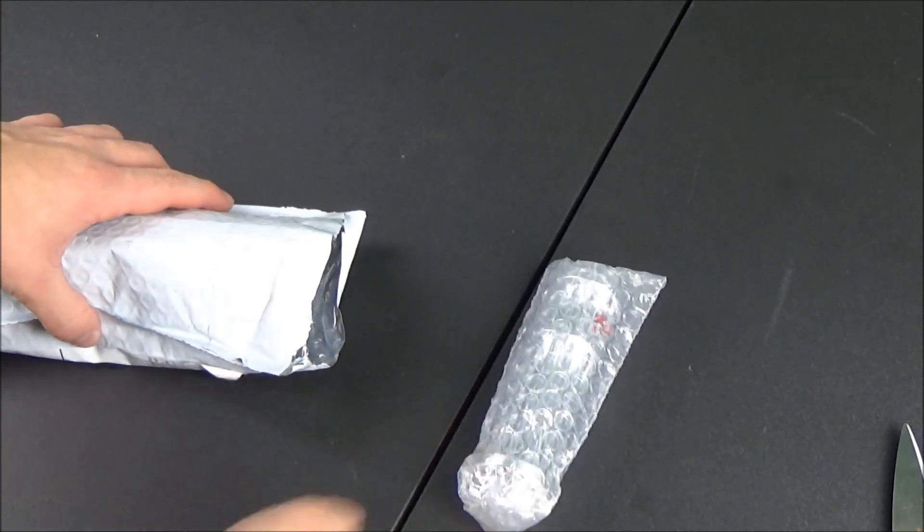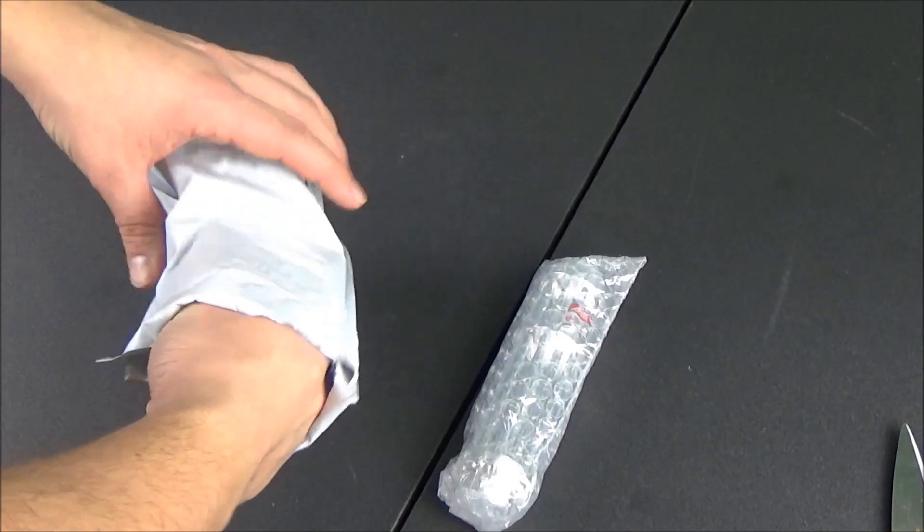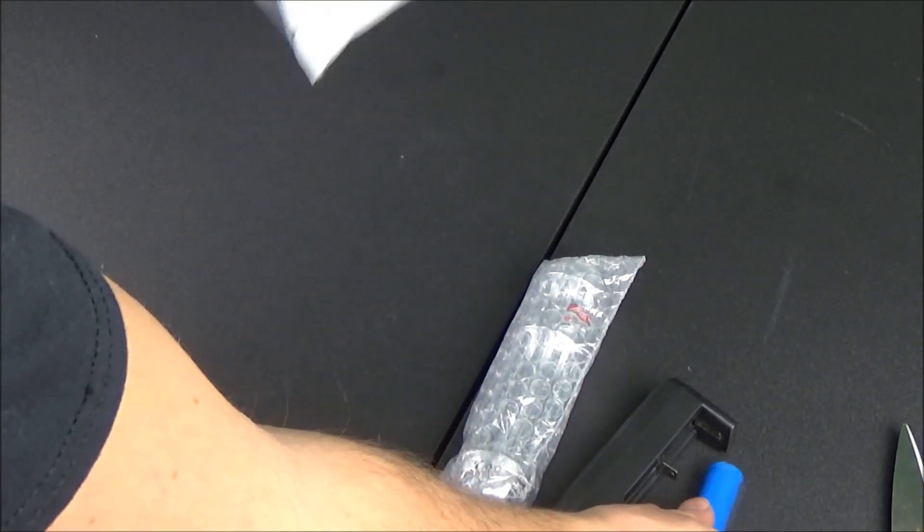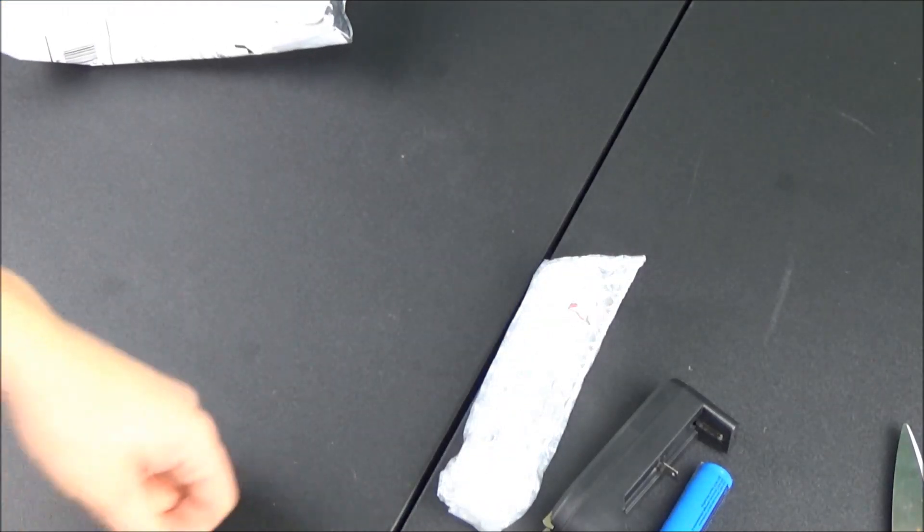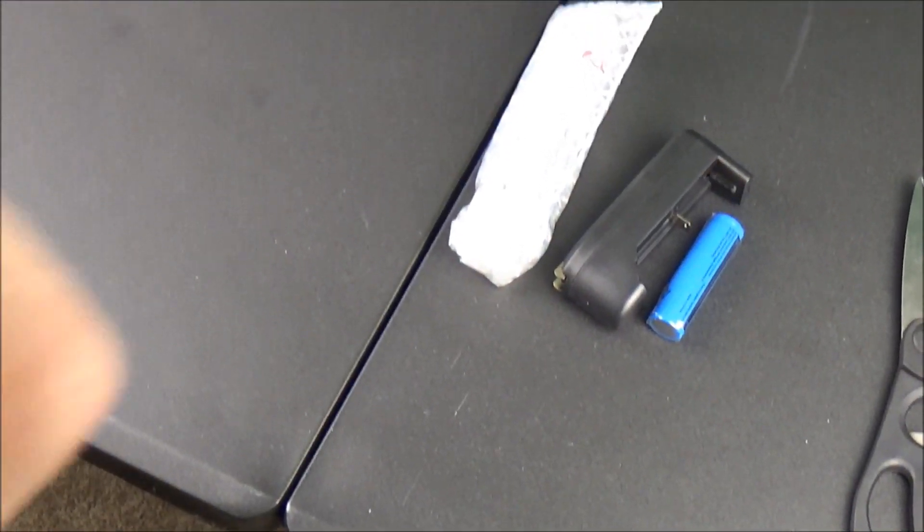Today I'm going to be doing a review of that same laser, but this one's the red version. This is the Chinese red 650 nanometer one watt laser pointer. It sells for around $30 on eBay and comes with the laser itself, a battery which is an 18650 battery, a charger for that battery, and a little star cap attachment too.